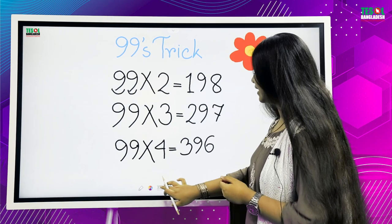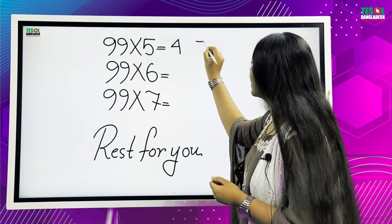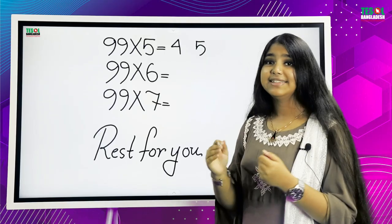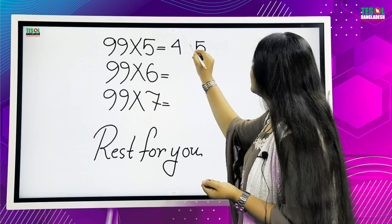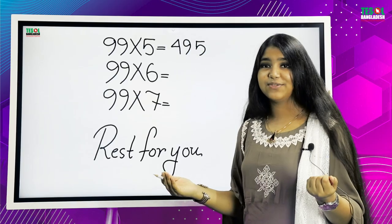So, we write 45 by keeping a gap in the middle. Taking the second 9, we put it in the middle and we get 495.